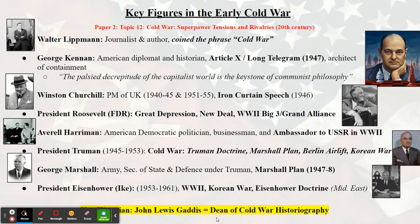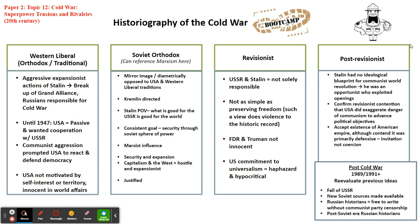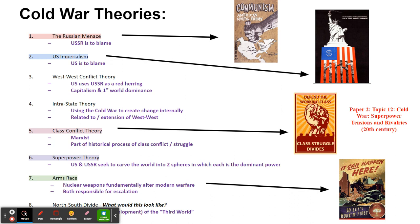For historians, our key historian for Cold War is going to be John Lewis Gaddis, known as the Dean of Cold War Historiography. We did an activity in class looking at the historiography of the Cold War from Western liberal, Soviet Orthodox, revisionist, and post-Cold War perspectives — remember one of the author's names was Craipol and you guys laughed about it. For Cold War theories, you don't have to memorize all of them, but it would be helpful to flesh out Western liberal historiography with the Russian menace theory, or Soviet Orthodox historiography with the U.S. imperialist theory. Marxists are always coming in hot with the class conflict theory. You could also bring in superpower theory and arms race. Some other key terms would be mutually assured destruction, or MAD.